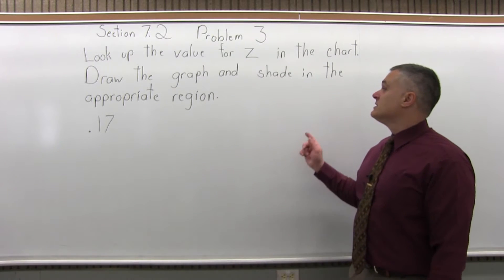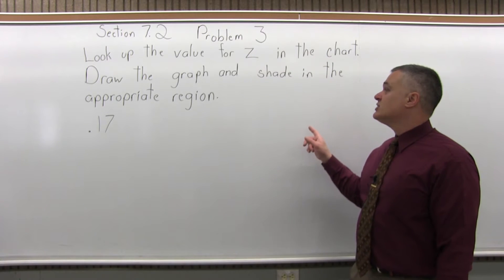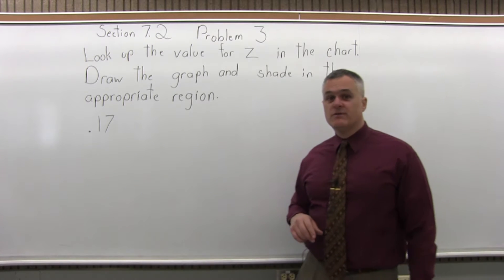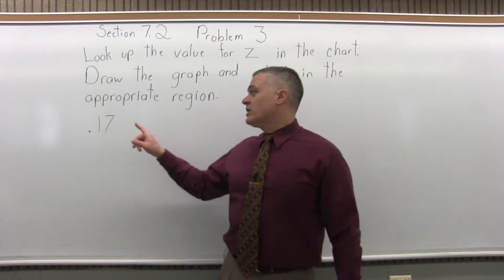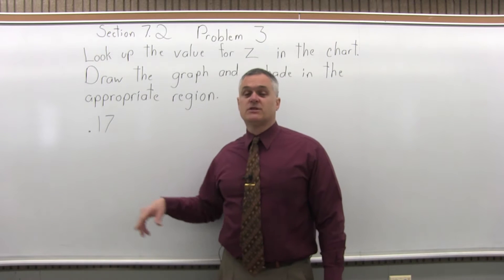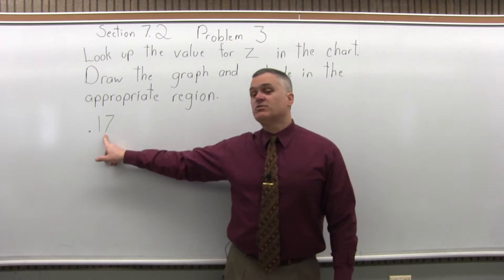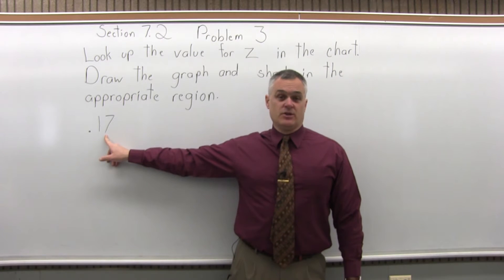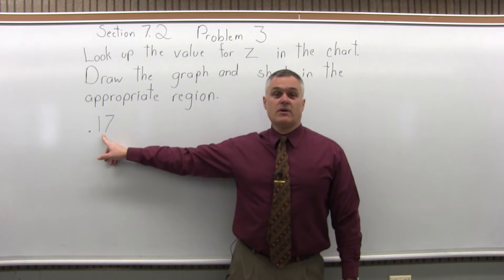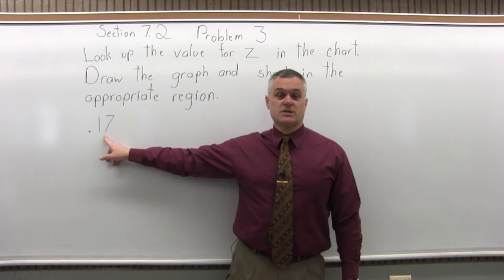It says look up the value for z in the chart and draw the graph and shade in the appropriate region. And the value we have to look up in the chart is .17. So it's a four-step process to look it up. Step one is write the number so that it has two places after the decimal. You either fill in zeros or round it off as necessary. This number already has two places after the decimal, so step one is all set.